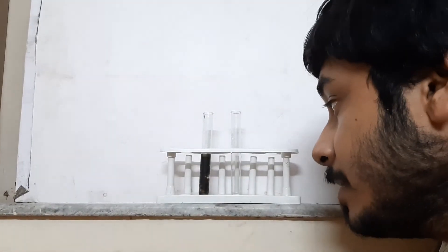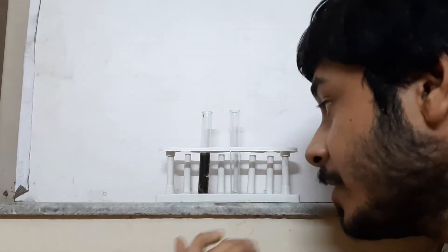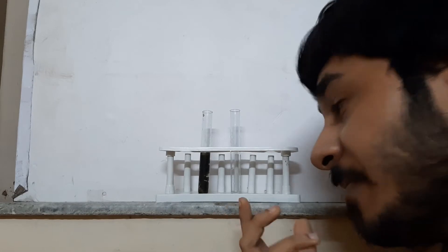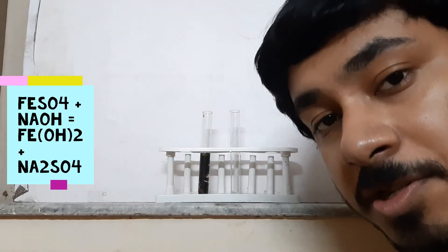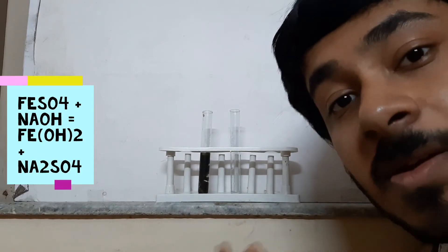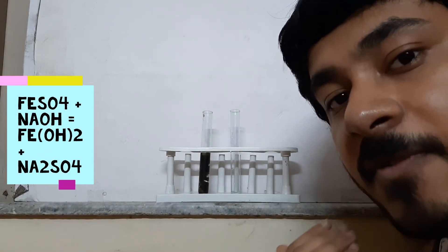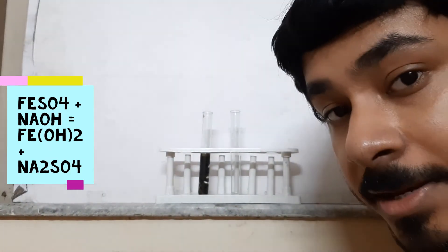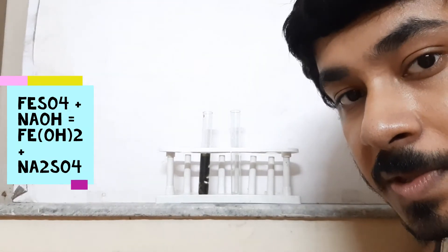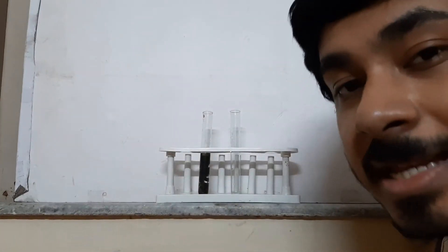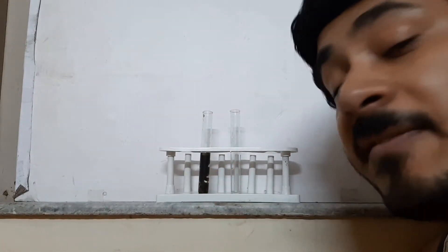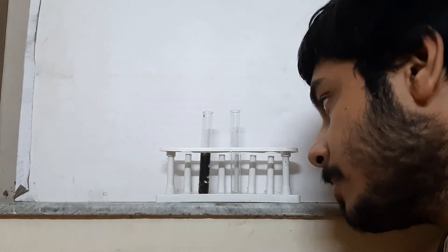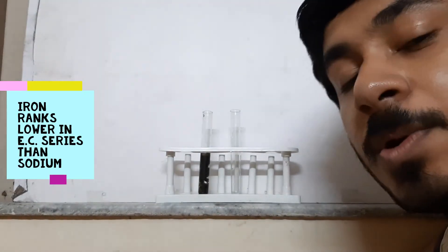As you've seen, it turned into a dark green precipitate. This is because FeSO4 reacts with NaOH (sodium hydroxide) to yield Fe(OH)2 (ferrous hydroxide), and the sodium part reacts with the sulfate anion to give Na2SO4 (sodium sulfate), which stays in aqueous form. Since Fe(OH)2 is insoluble, it comes out as a precipitate.